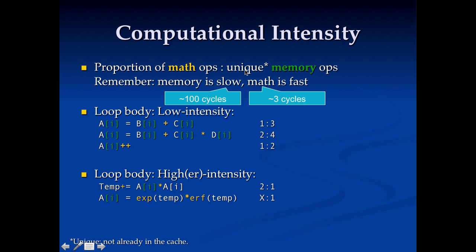So one thing to keep in mind here is I say unique memory operations. If the data is in a cache, then it doesn't take 100 cycles to access. Maybe it only takes 5 or 10 or 20 cycles to access, but it's still not very fast.